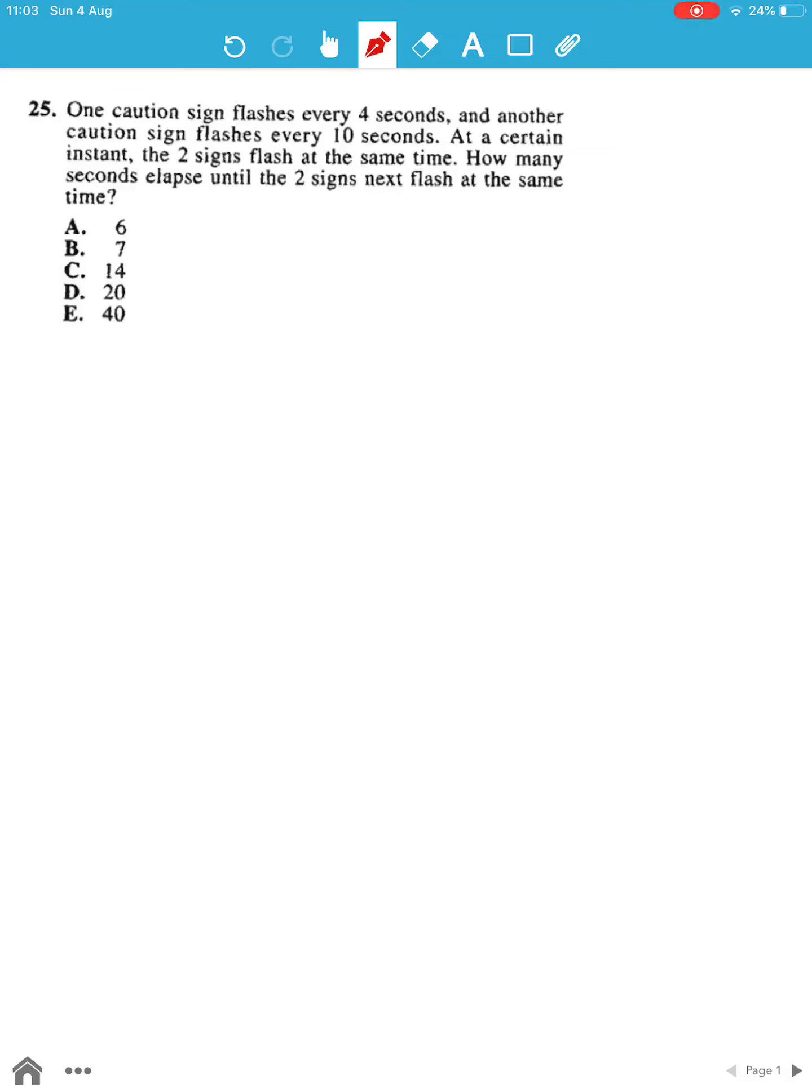For question number 25, we see that we have two numbers: 4 seconds and 10 seconds, and we have to find out the least common multiple, which is the LCM.